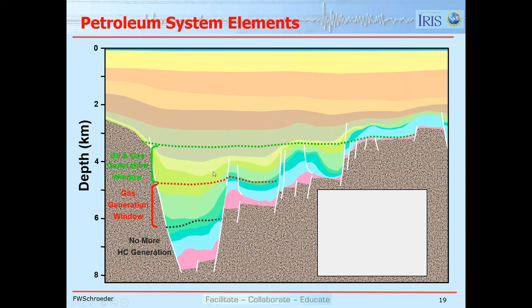The amount of oil generated is somewhat dependent on the character of the source material. Below the red line, all the oil that will be generated has been generated, and we only generate gas. From the red to the black line, we're in the gas generation zone. Below the black line it is so hot, so deep, and so pressurized that no more hydrocarbon will be generated. So we talk about the immature zone, the oil window, the gas window, and the over-mature window.